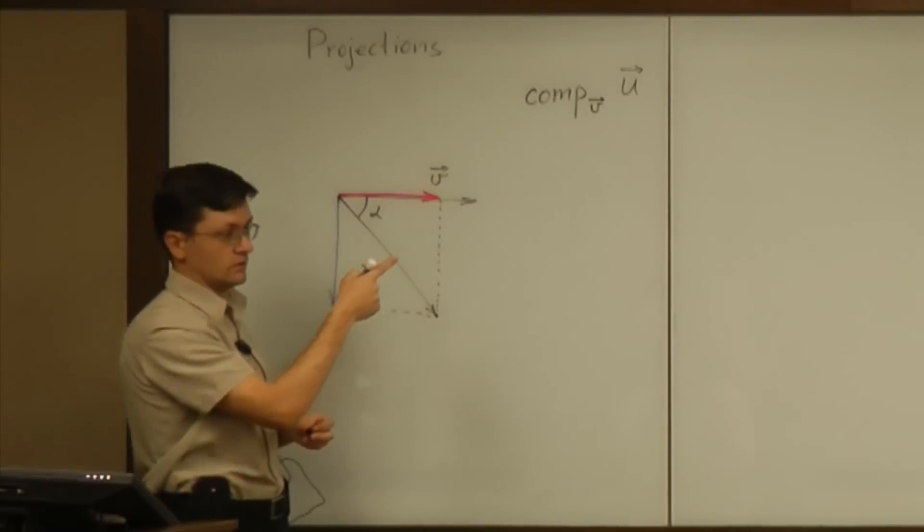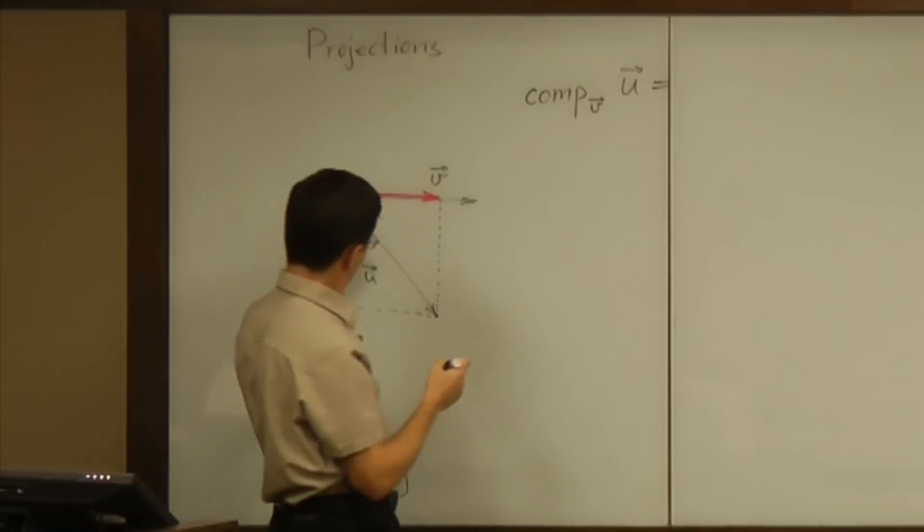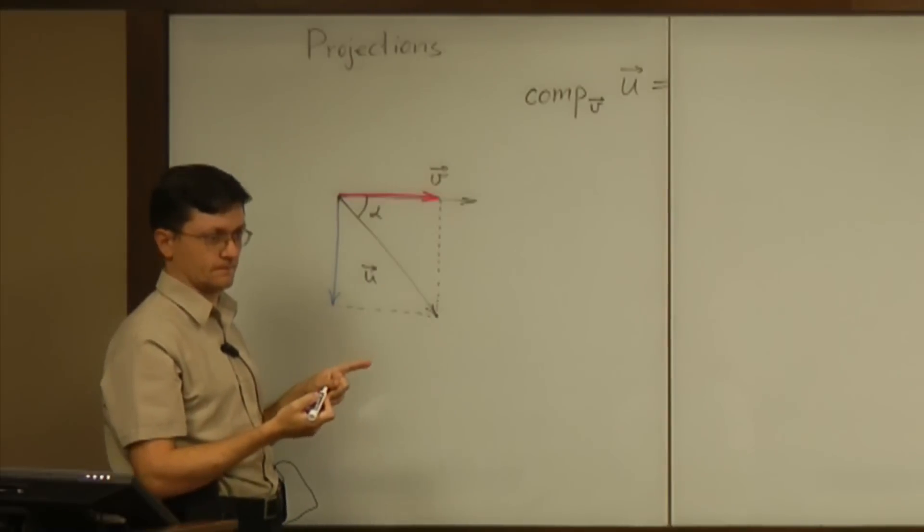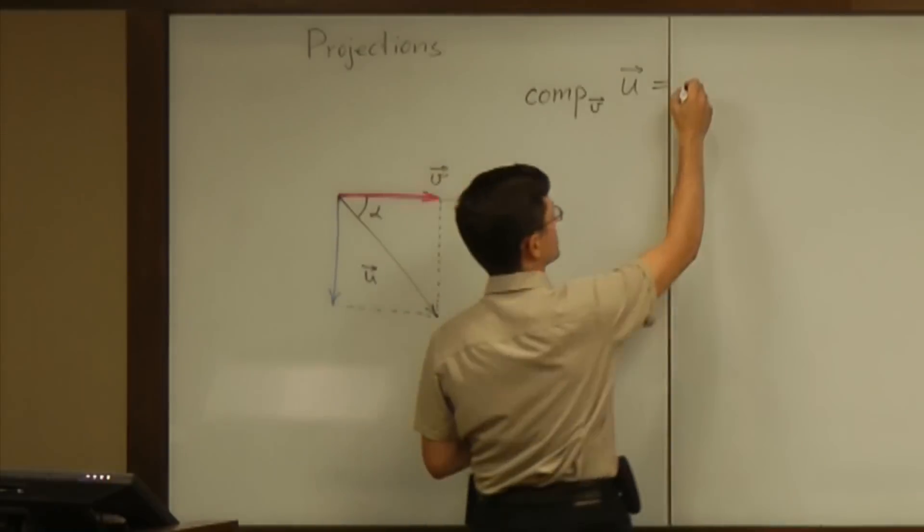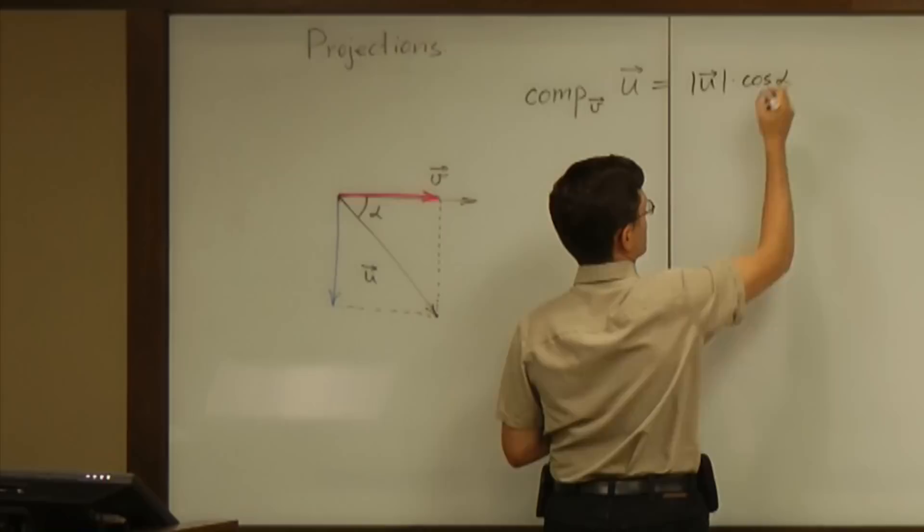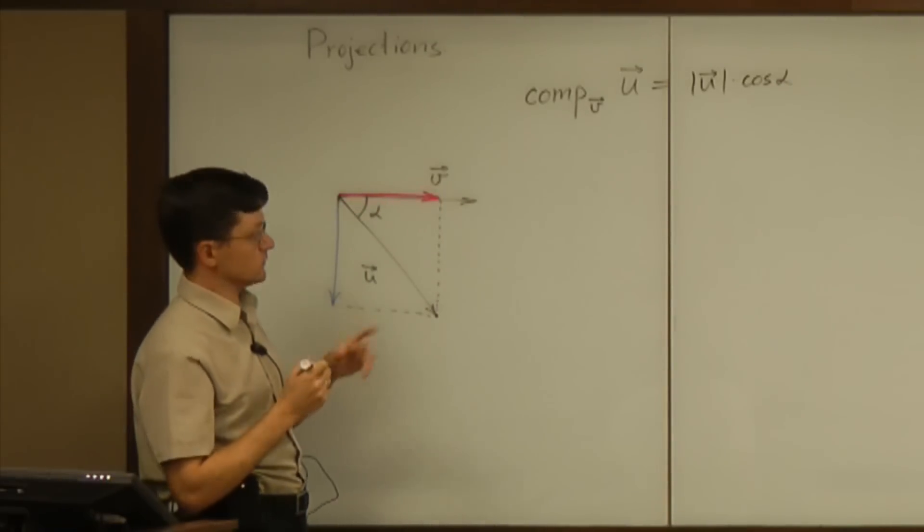So that is going to be a number. And the value of that number is going to be, from this triangle, the magnitude of u times cosine of alpha. This formula.